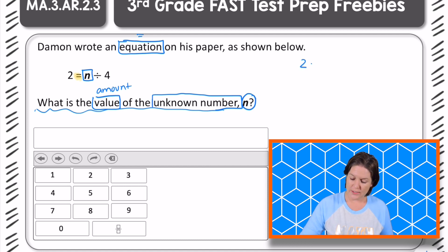So really we're thinking, what number divided by 4 equals 2? It can also be written as this: n divided by 4 equals what number?